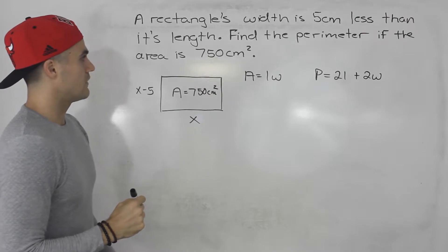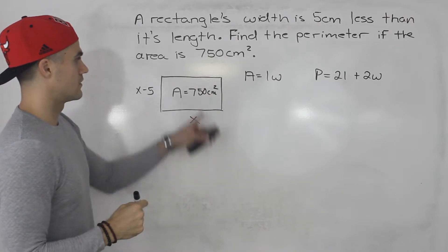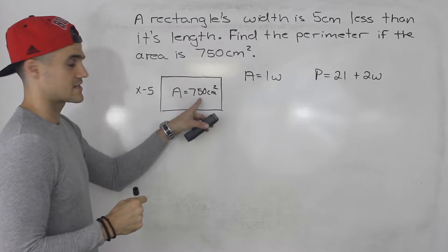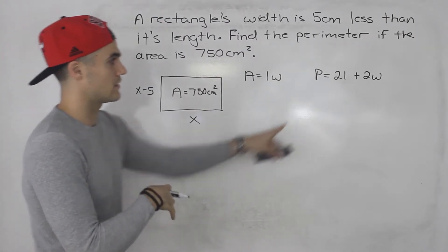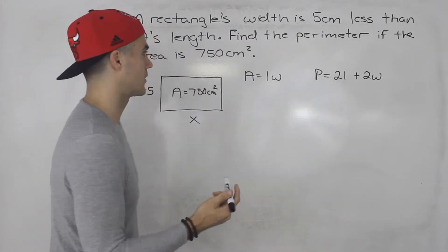If we can find the length and the width with this area that we were given, then we could take that length and width, substitute it in, and that will give us the perimeter.